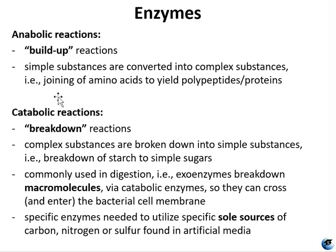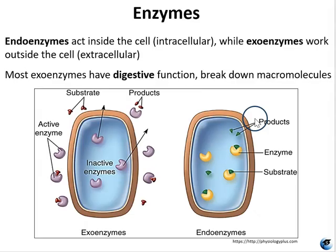Catabolic enzymes break down macromolecules via catabolism so that these molecules can cross and enter the bacterial cell membrane. Specific catabolic enzymes must be produced by specific microbes in order for them to be able to utilize the only available sources of carbon, nitrogen, or sulfur in a given type of artificial media. Primarily in lab 8, we are looking at catabolic enzymes.